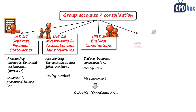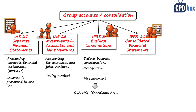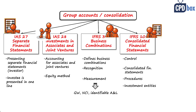IFRS 10, Consolidated Financial Statements, is directly related to IFRS 3 because it defines control — what it is and when the acquirer exercises control over its investment. It requires a parent or investor to present consolidated financial statements, establishes the consolidation procedures that the investor must follow, and sets some exceptions, for example investment entities that don't need to prepare consolidated financial statements.